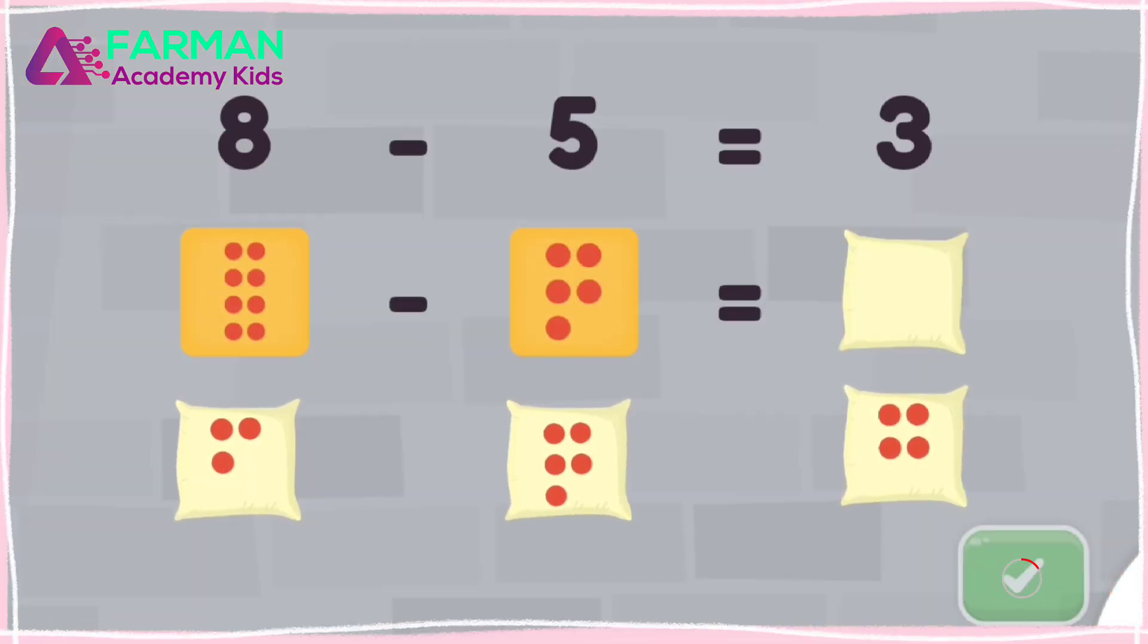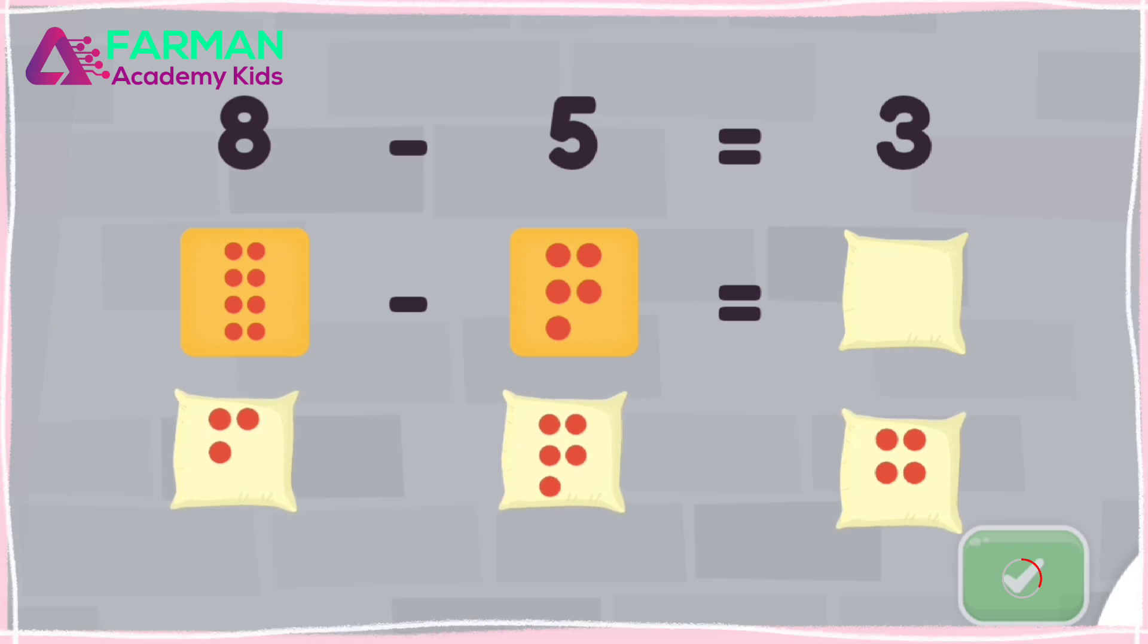How much is 8 minus 5? Drag the number of dots to the empty square. Woohoo! 8 minus 5 is 3.